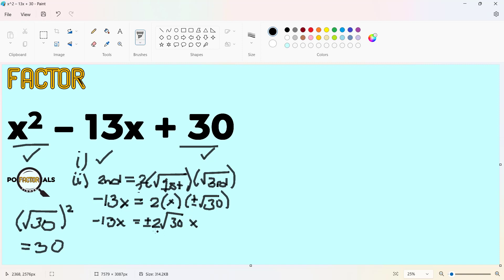Negative 13x is equal to two times this. So, we have plus minus two square root of 30x. We have two possible results, but neither of them will give us negative 13x. This is the further proof that the second condition is not satisfied. And of course, the given is no longer a perfect square trinomial.